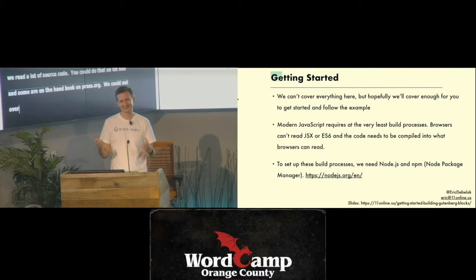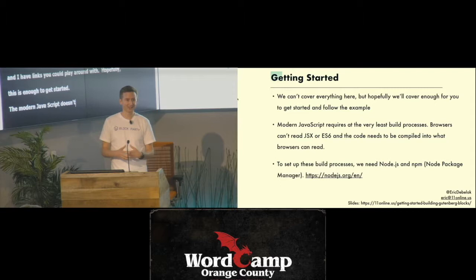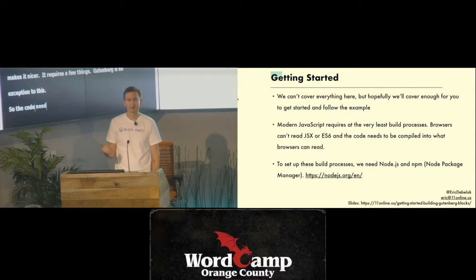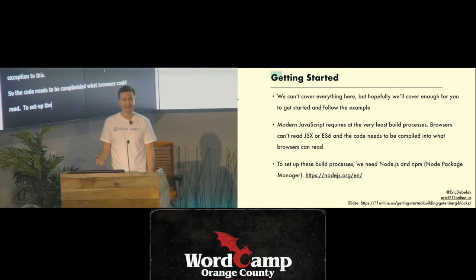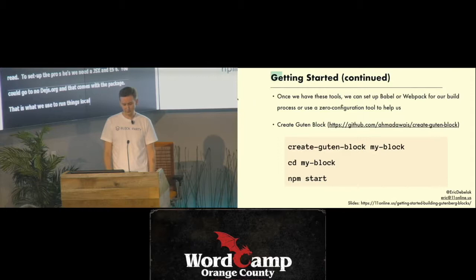Getting started — we can't possibly cover everything here, but I want to give you enough to get started. Modern JavaScript does not just run in the browser — you need a build process. This makes writing JavaScript a whole lot nicer, but it requires a few things to be set up. The code needs to be compiled into what browsers can read, and to set up these processes we need at least Node.js and NPM installed. You can just go to nodejs.org, download Node.js, install it, and that comes with NPM — the Node Package Manager — which is what we use to run and build things locally.